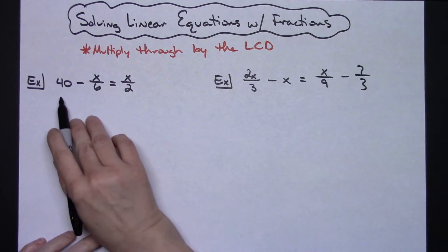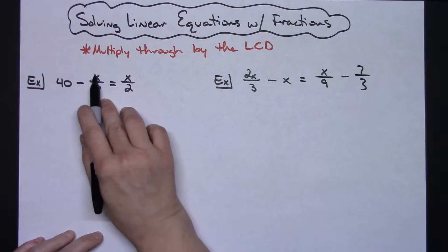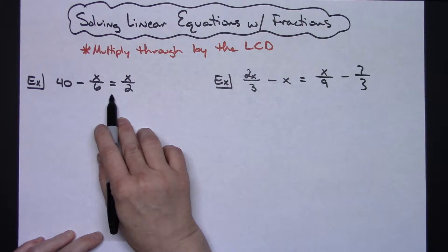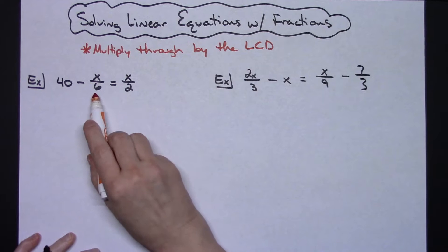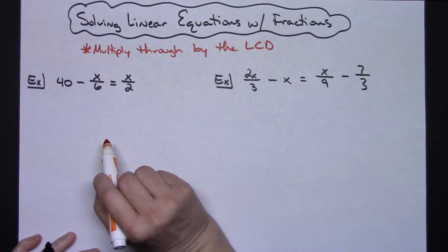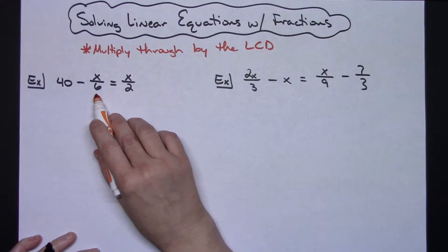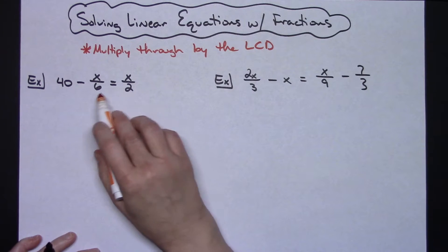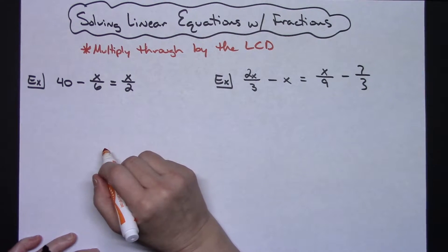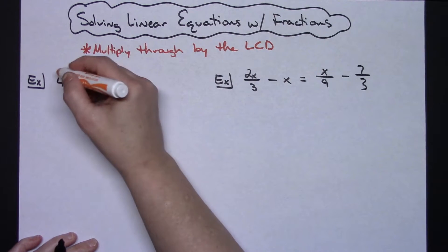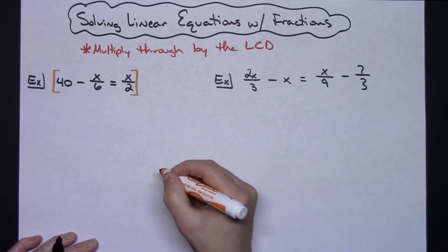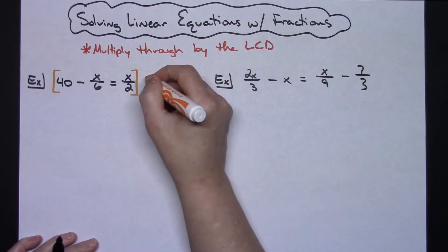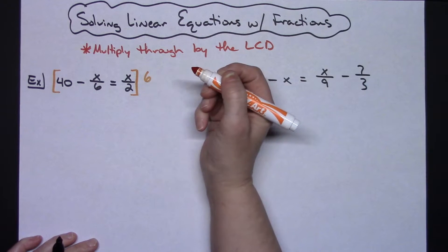On this first equation we've got 40 minus x over 6 equals x over 2. I'm going to take a look at both of those denominators. I have a 6 and a 2, and I'm going to choose the least common denominator which is 6. Both 2 and 6 go into 6 — that's the smallest number they both go into — so I'm going to multiply everything by that LCD of 6.